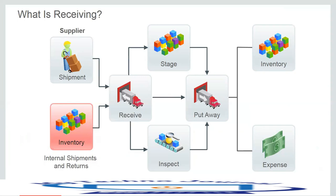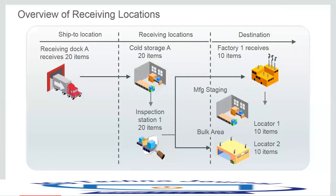With the lowest level overriding previous levels, we can also record receipt of unordered items, research received, and match the receipt to an existing purchase order. We can put away items from the receiving or inspection locations to their final destination, define which items require inspection, and accept or reject items with detailed inspection results. We can also record returns to suppliers and correct receiving transaction errors.